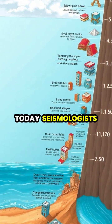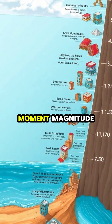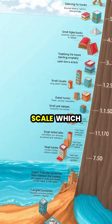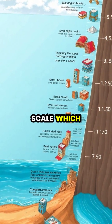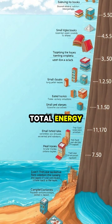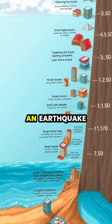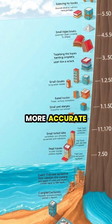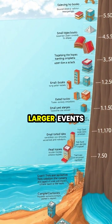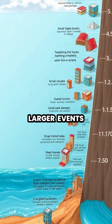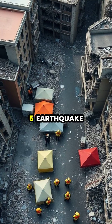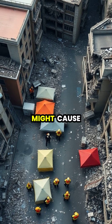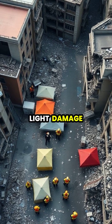Today, seismologists prefer the Moment Magnitude Scale, which measures the total energy released by an earthquake and provides more accurate readings for larger events. A magnitude 5 earthquake might cause light damage,